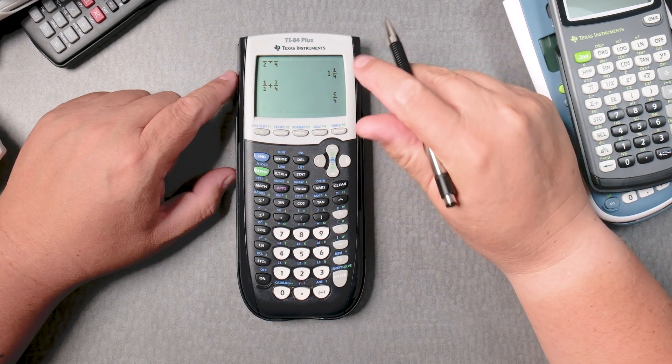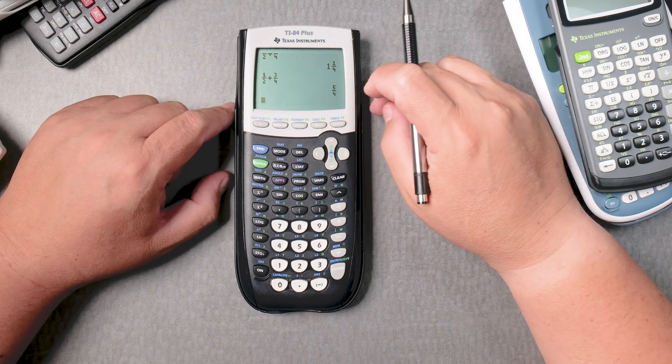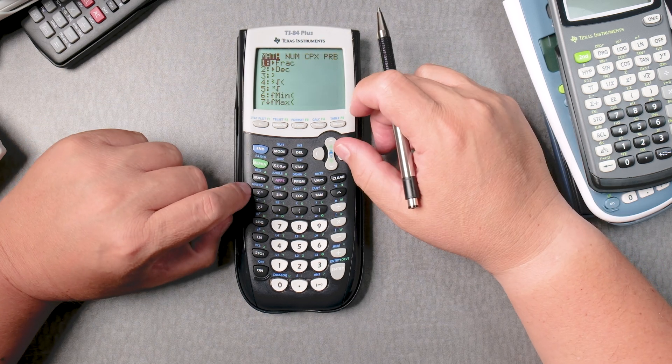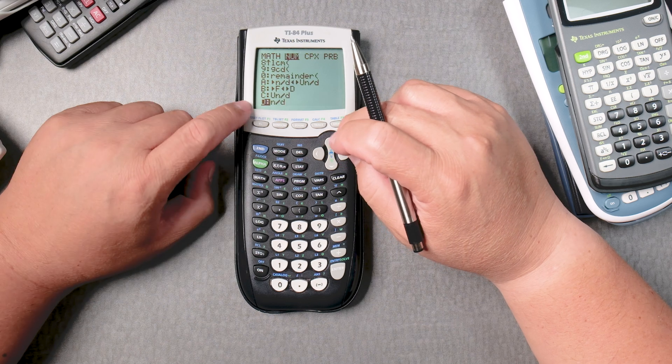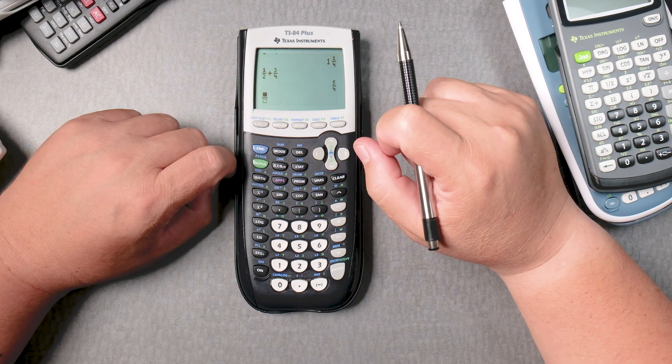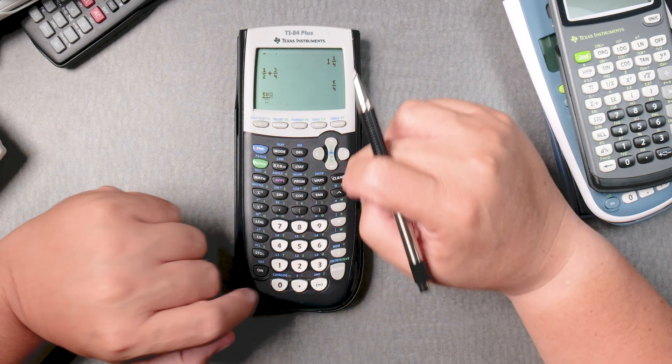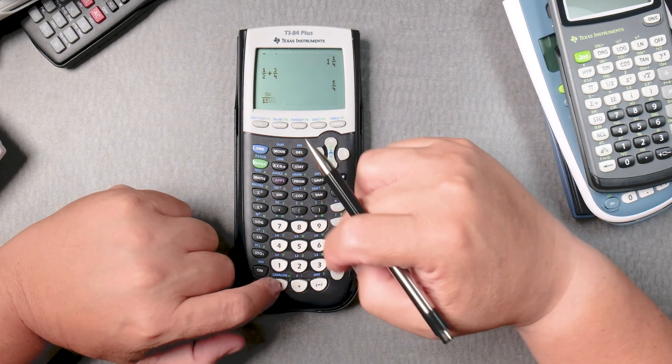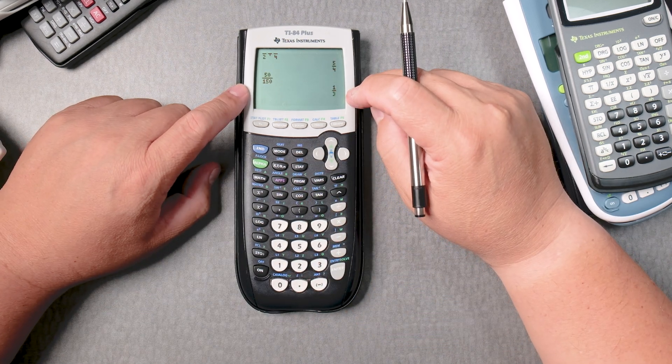Let's say I want to reduce 50 over 150. Same thing. Go to MATH, which is NUM, go up, which is this one, let's say it's 50, go down, 150, enter and it gives you a reduced fraction.